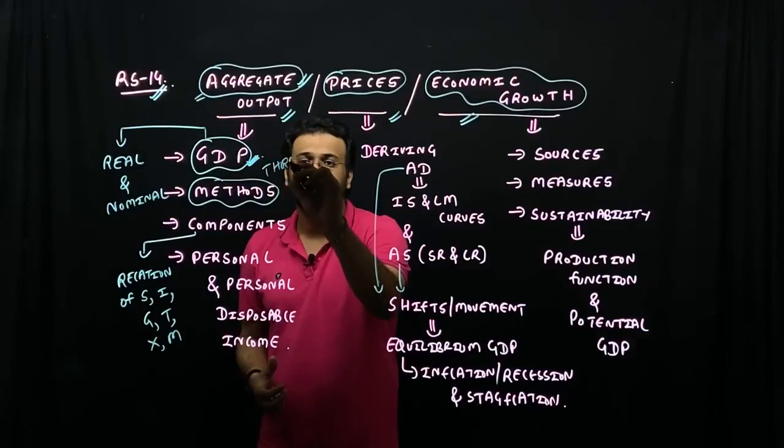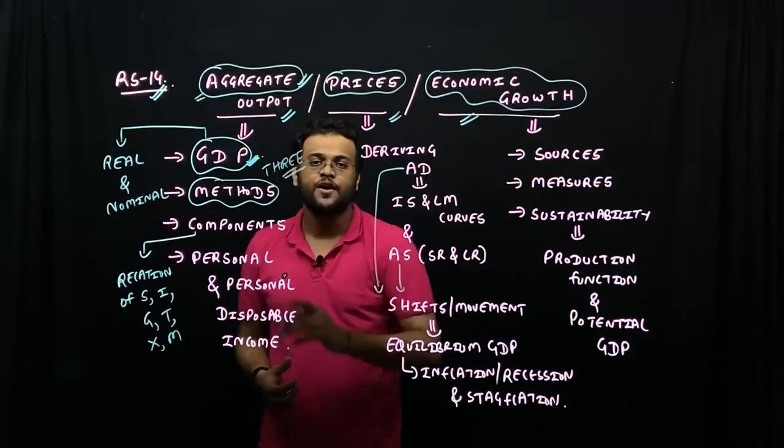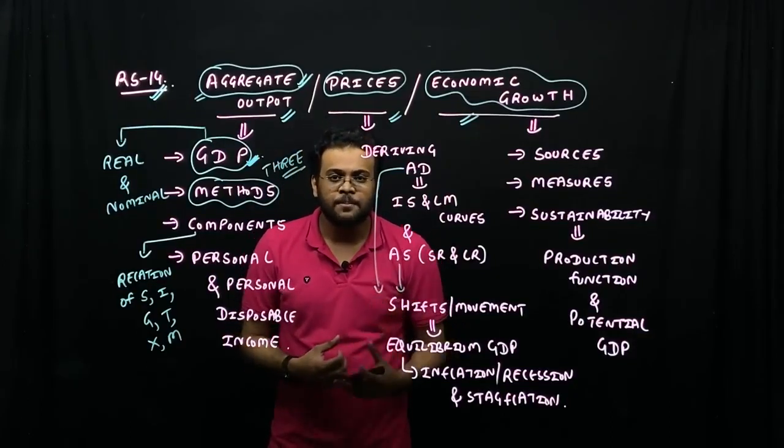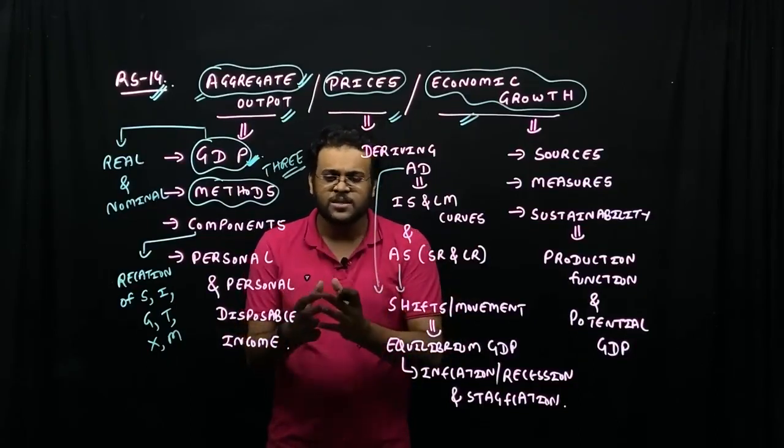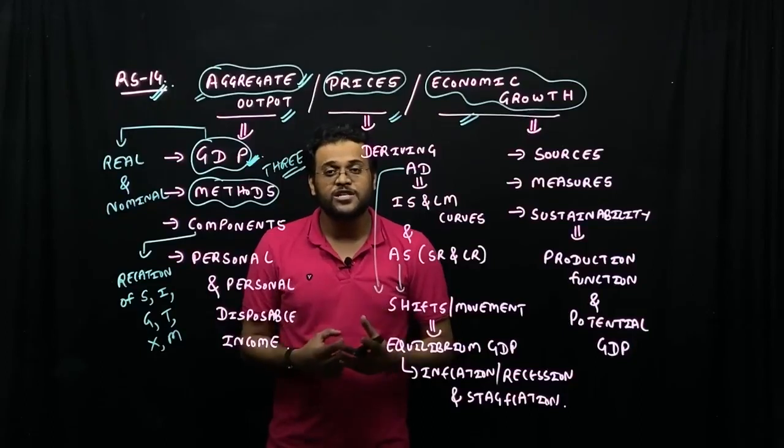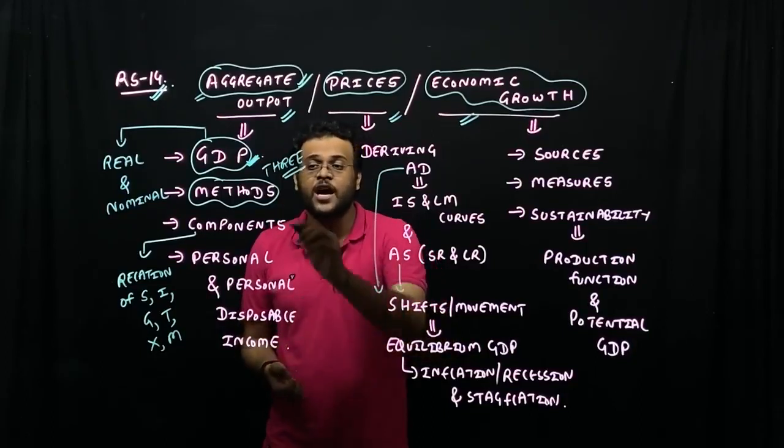Ideally, we have three methods. There are three methods: value-added method, income method, and expenditure method. These methods are calculation approaches. But how does it take care of these methods?